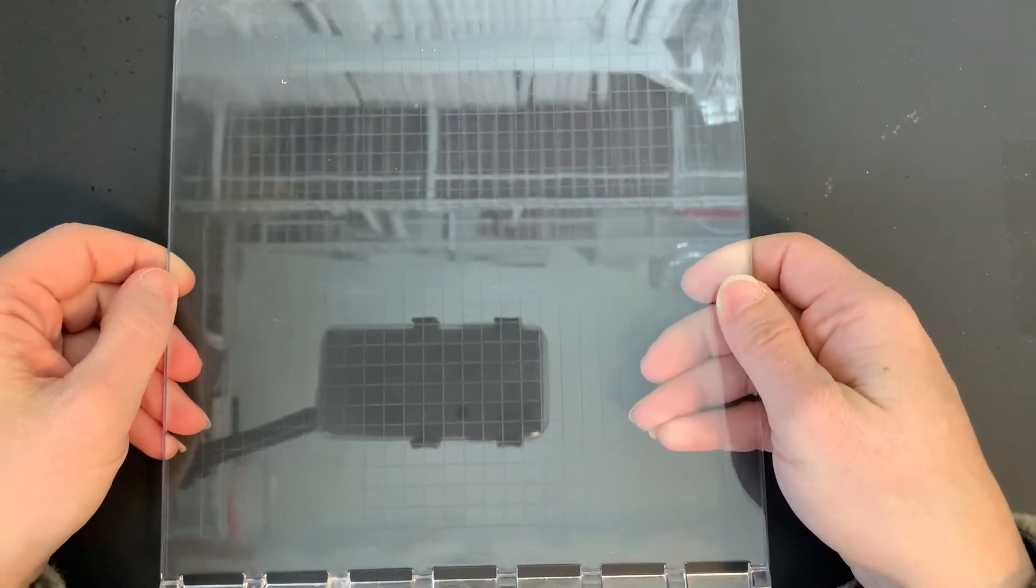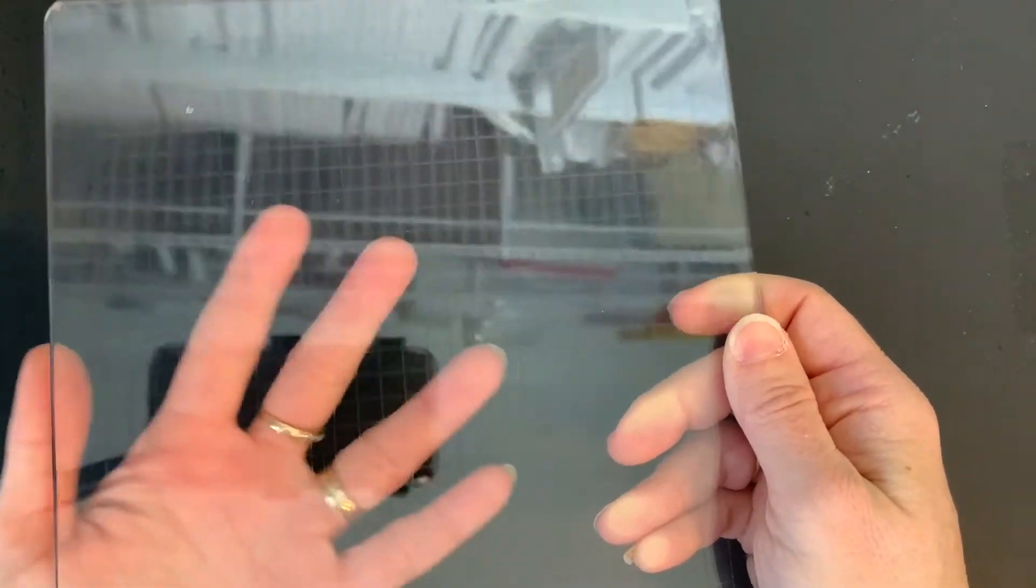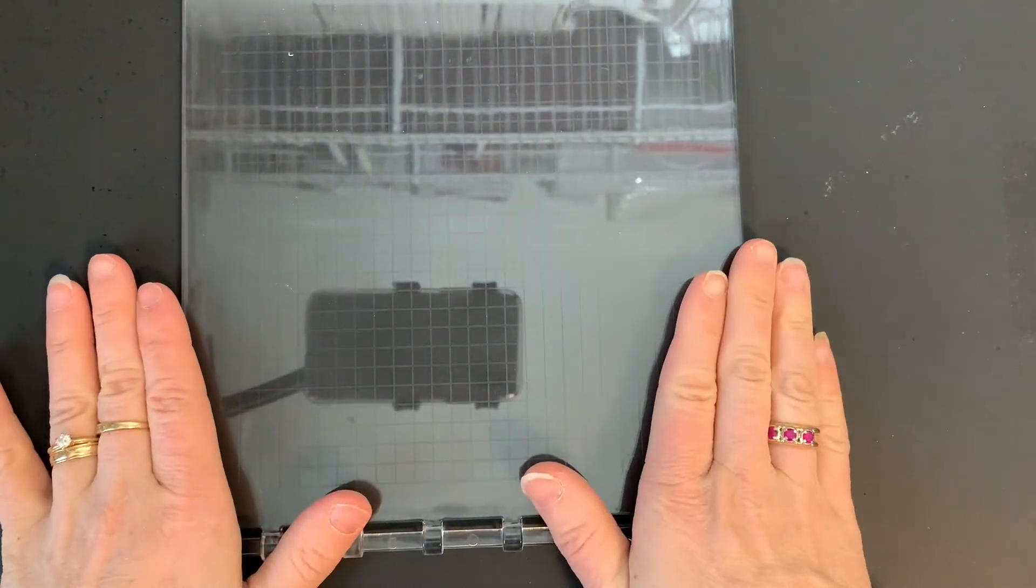I am bringing in one of the plates for my stamparatus. The plates have a grid on them and one side has the grid you can actually feel, and the other side is smooth. So you're going to want to work with the smooth side.